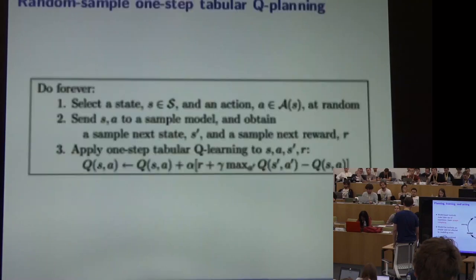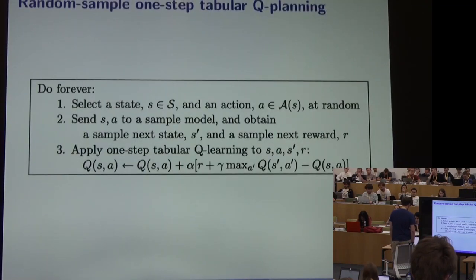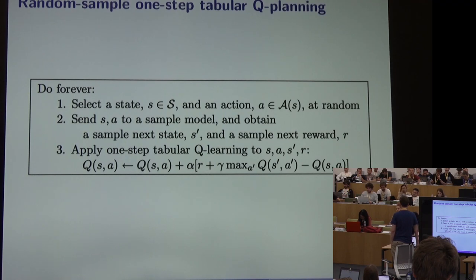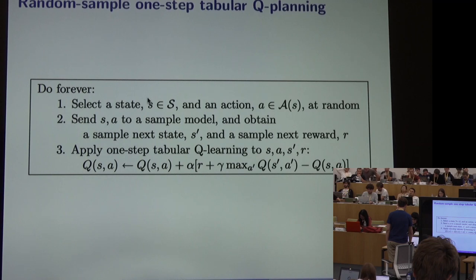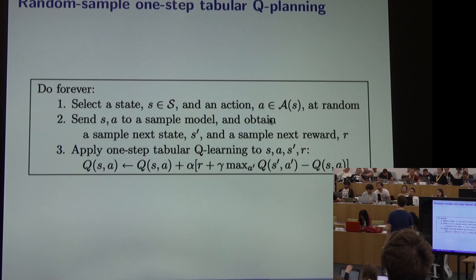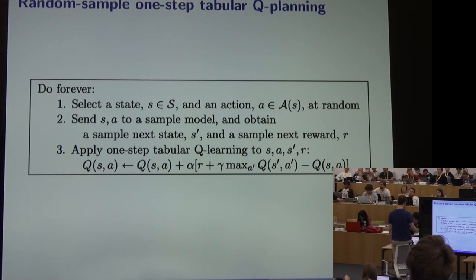A very simple model-based method is tabular Q-planning. It's exactly Q-learning, but updates are performed on data points sampled from a model rather than from a real stream of interaction. We randomly select a state-action pair, query the model for the reward and next state, then use the resulting tuple to do a Q-learning update — essentially Q-learning where you interact with a model instead of the world, which requires a generative model to teleport to arbitrary states.